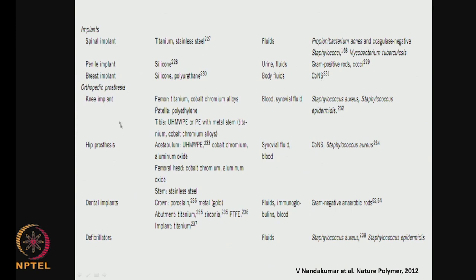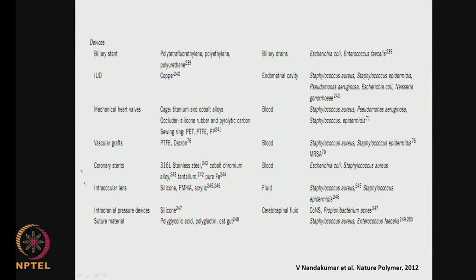Orthopedic implants — whether knee, hip, or dental — and defibrillators use different types of materials, mostly metals like cobalt, chromium, aluminum, stainless steel, gold, and inorganic materials like zirconia, chromium, and aluminum oxide. They all have different types of bacterial contamination including Staphylococcus, coagulase-negative Staphylococcus, and gram-negative anaerobes. Devices like biliary stents, intrauterine devices such as copper, vascular grafts, coronary stents, and intraocular lenses can all end up with Staphylococcus aureus, Staphylococcus epidermis, and E. coli.